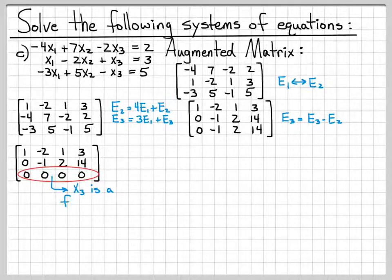What that means is that the variable x3 is what we call a free variable, which means that in the solution of this system of equations, x3 is allowed to be any value we choose. And then x1 and x2 are going to have values based on the value we choose for x3.